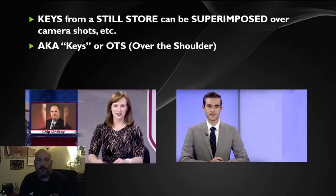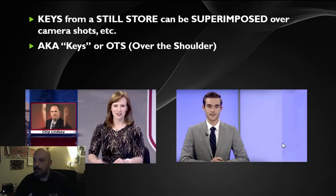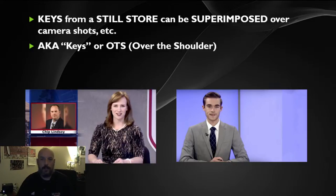Another thing we can do with alpha channels is for photographs, used in a type of shot called an OTS or over-the-shoulder graphic. In this, I have an image with a solid area for a photo I want to use, but the outside elements are partially transparent, giving me the ability to incorporate this graphic into parts of my set. When setting up the anchor shot, you can see that for the camera operator there's an empty space next to them. Through the production switcher, I'm able to superimpose or key that shot roughly over their shoulder — using a PNG with an embedded alpha channel to incorporate that image.